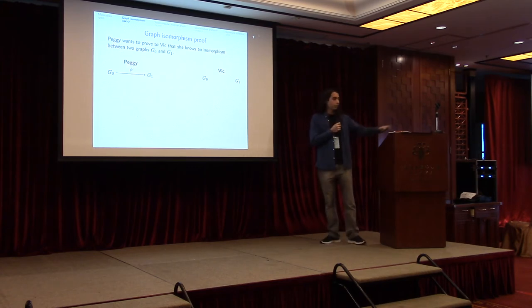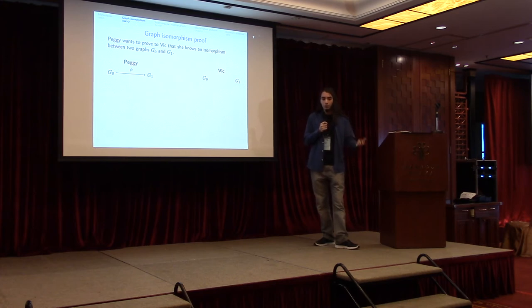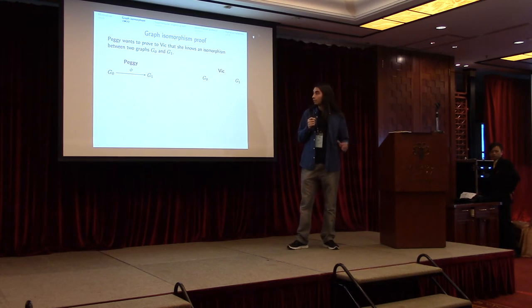So, graph isomorphism first. This is a textbook example of a zero-knowledge proof. We have two parties, Peggy and Vic. Peggy is the prover that knows a secret and wants to prove to Vic, the verifier, that she knows the secret without revealing any information about it. In this case, the secret is an isomorphism between two graphs, not isogenies yet.